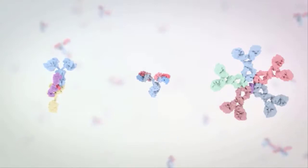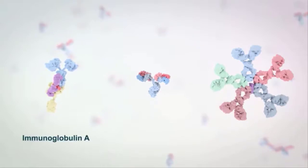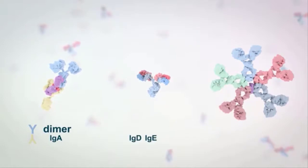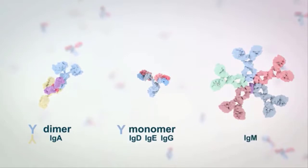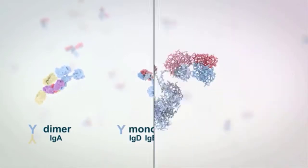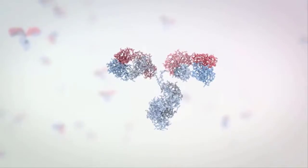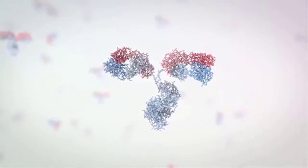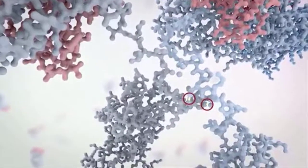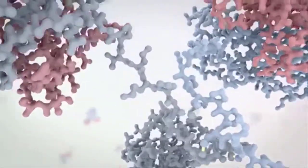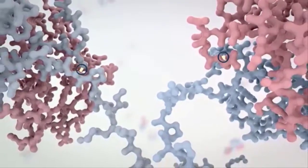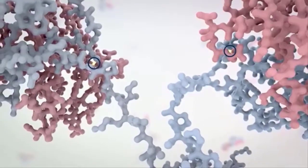Different isotypes can have different oligomeric states: IgA forms a dimer, IgD, IgE, and IgG form monomers, and IgM forms a pentamer. The two heavy and two light chains of an antibody are held together through disulfide bonds within the constant regions. A set of two disulfide bonds connects the two heavy chains in the hinge region, while heavy and light chains are bound together with a disulfide bond bridging opposing cysteine residues.